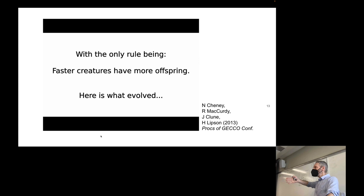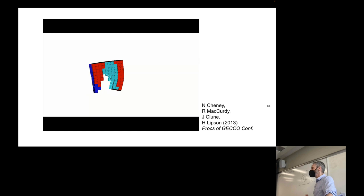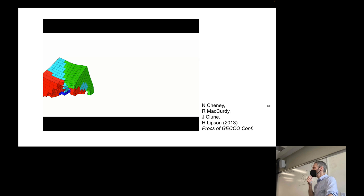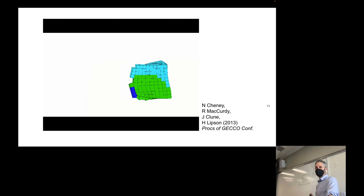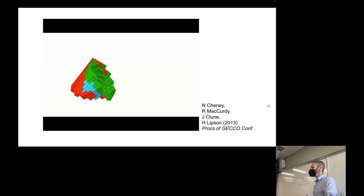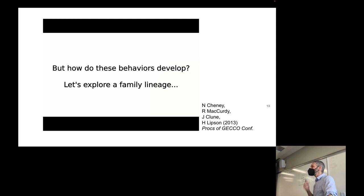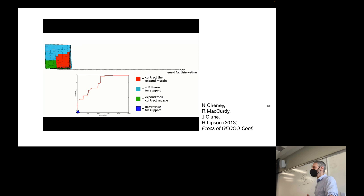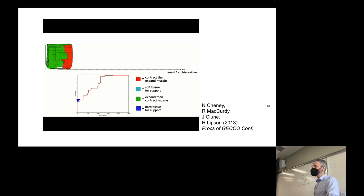Dark blue is bone — passive stiff material. Light blue is like fat — passive soft material. You can see the red and green groups moving in antiphase with one another. When this was published back in 2013, somebody dubbed these the Jell-O bots. Here's one evolutionary run — here's a fitness curve — and they're playing back the best robot in the population at that evolutionary time.